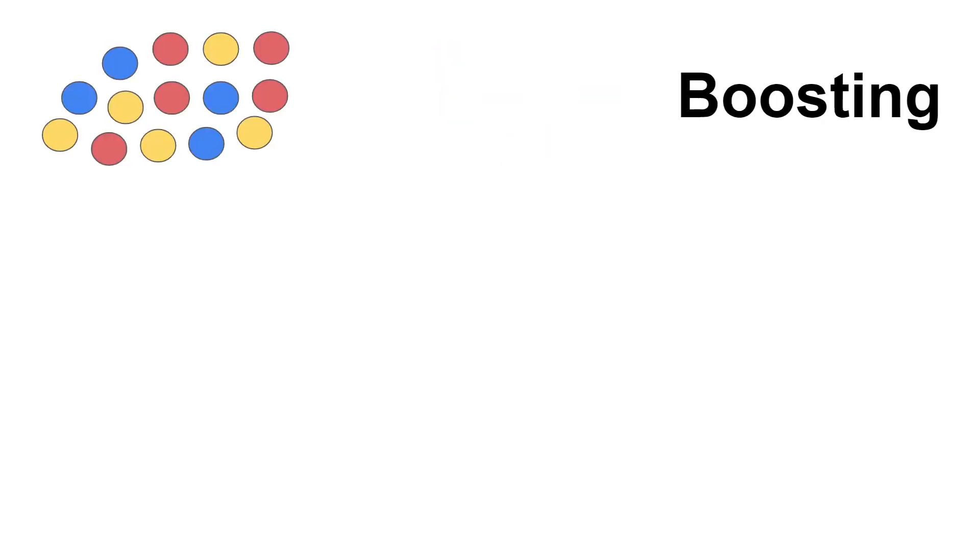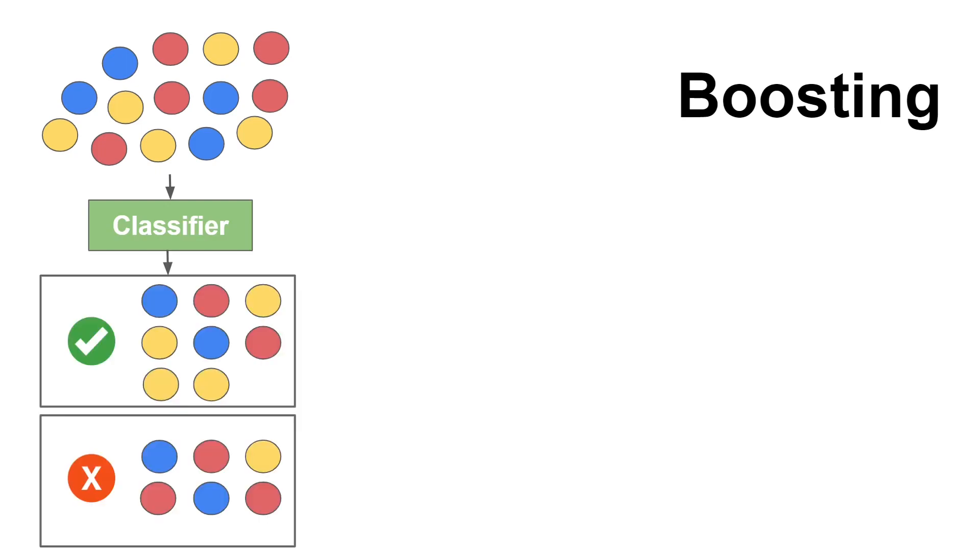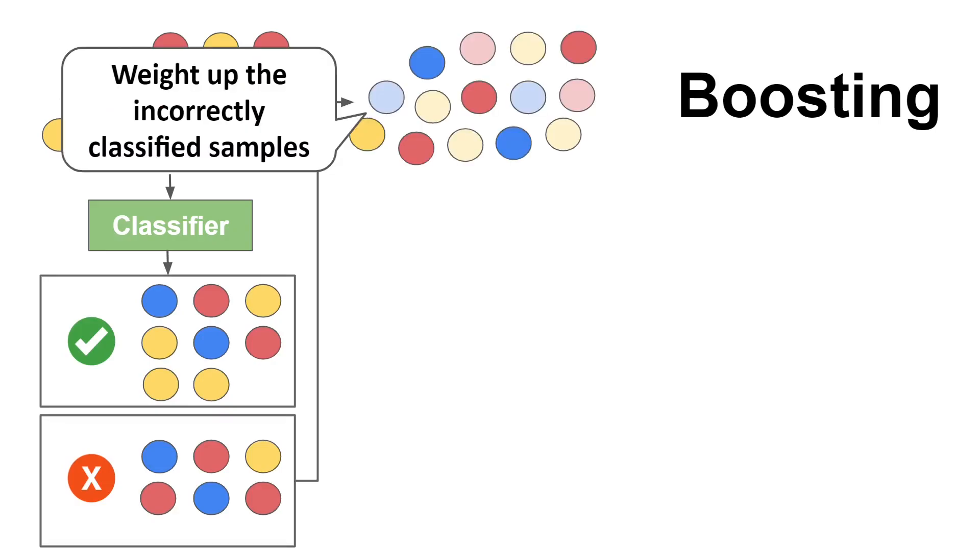When you use boosting on the other hand, the way you create these models changes quite a bit. So let's suppose that you have the same dataset. The first thing you do is to train a classifier on this dataset and see which samples were correctly classified by the model and which ones were incorrectly classified. Then you use this information to weight up the samples which were incorrectly classified by the model so that when you train the next model, it pays more attention to those samples and hopefully learns to correctly classify them.